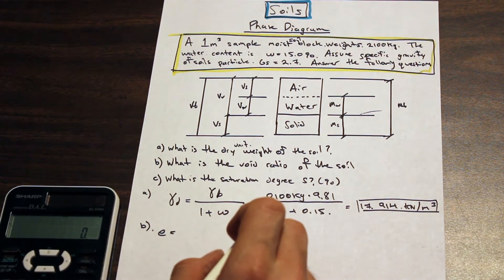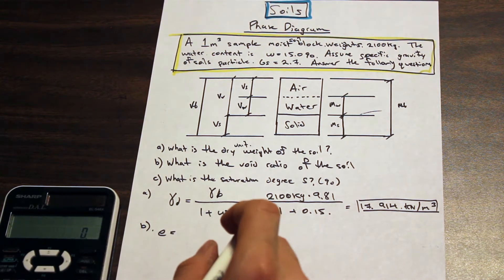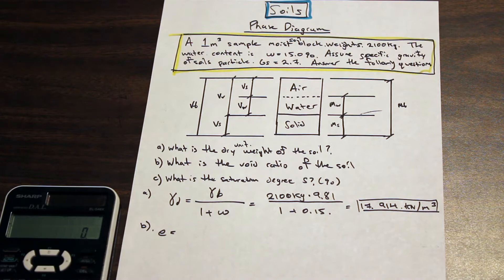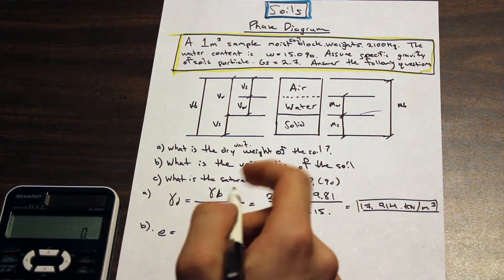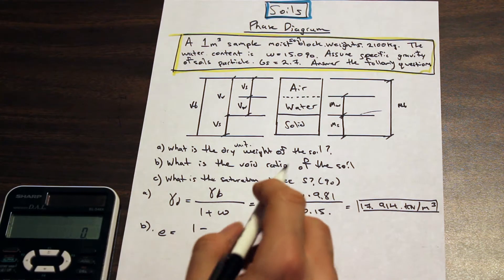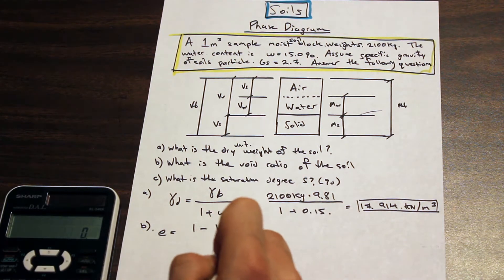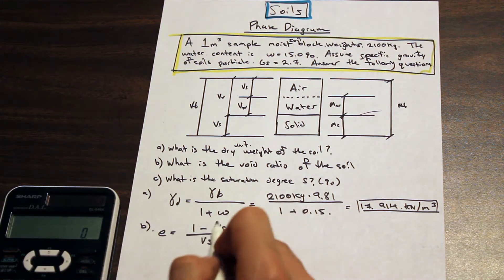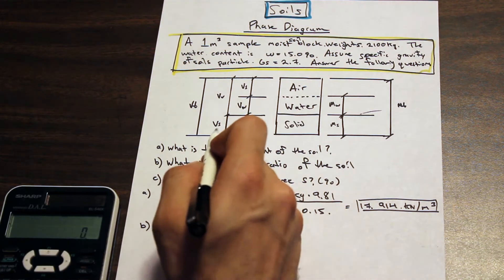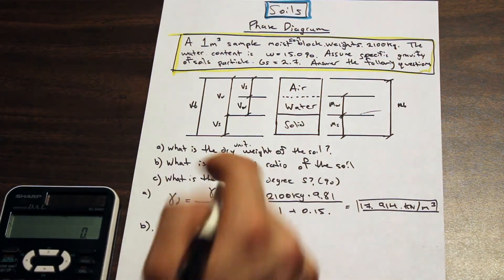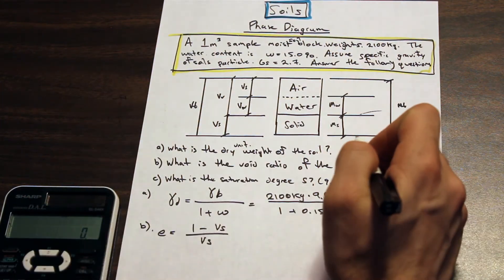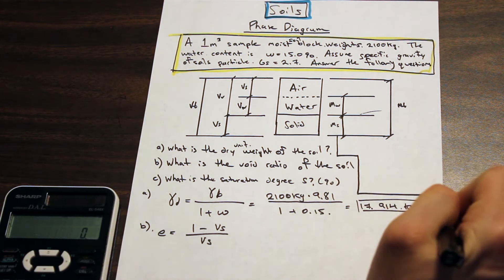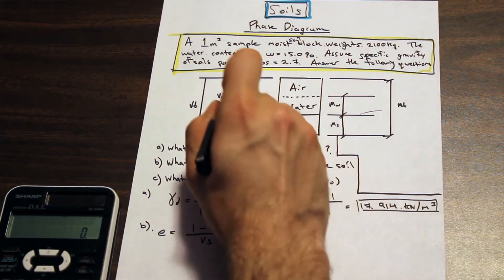The void ratio is a common question in soils and geotechnical engineering — you should always know the different formulas for void ratio because they're always asking about it. The formula we're going to use here is: void ratio e = (1 minus volume of solids) divided by volume of solids. The problem is that we don't have the volume of solids right now, so we're going to go up to our phase diagram and start solving to get the information we need.